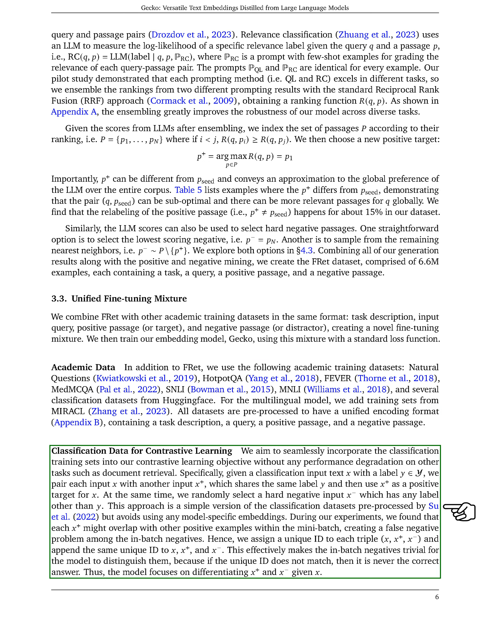We also utilize various academic training datasets and classification data for contrastive learning, pairing inputs with the same label as positive targets and selecting hard negatives randomly. To address false negatives within the mini-batch, we assign unique IDs to each input triple, ensuring the model can effectively differentiate between positive and negative examples.